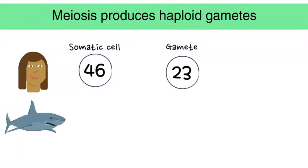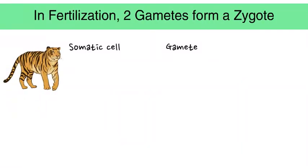In sharks, for example, which have 82 chromosomes, gametes contain 41. Let's take a look at another example. In tigers, a somatic cell contains 38 chromosomes. That means that a gamete has 19.